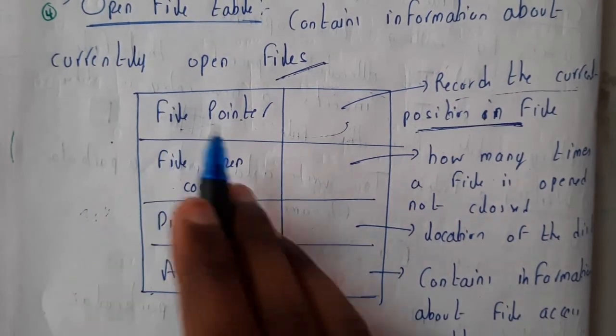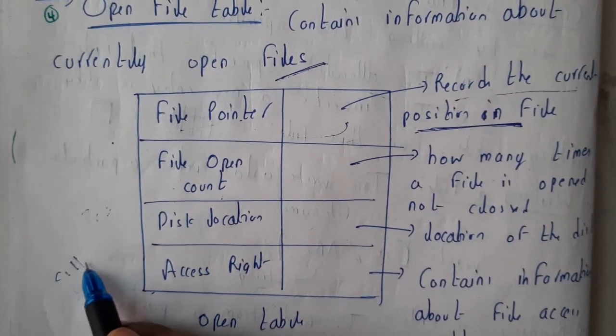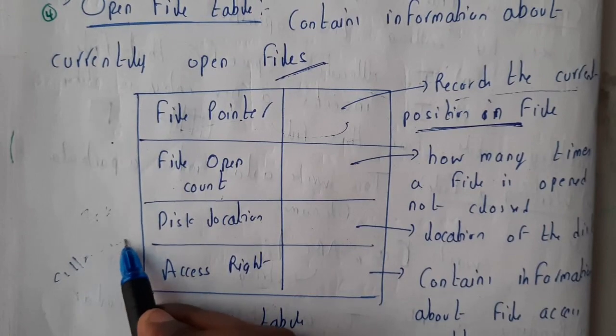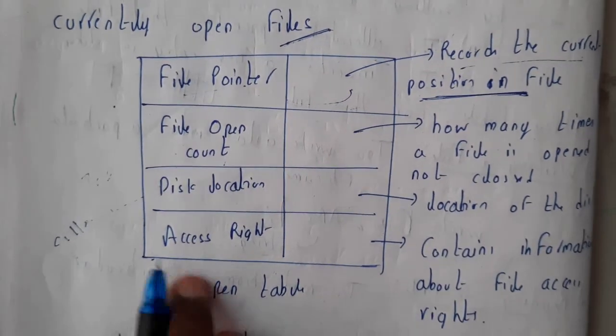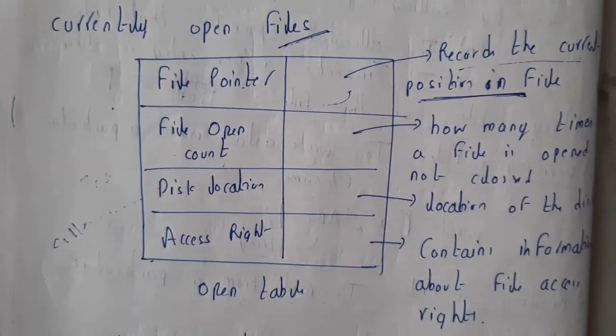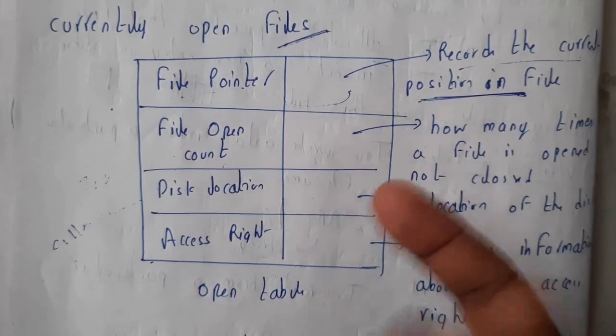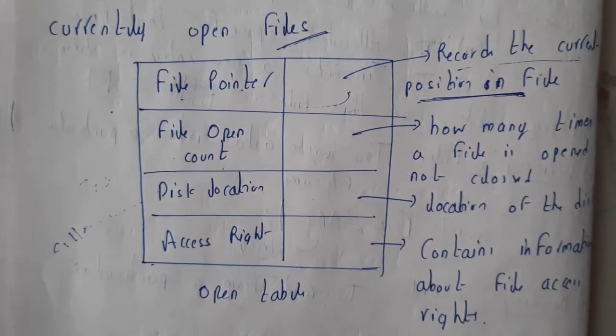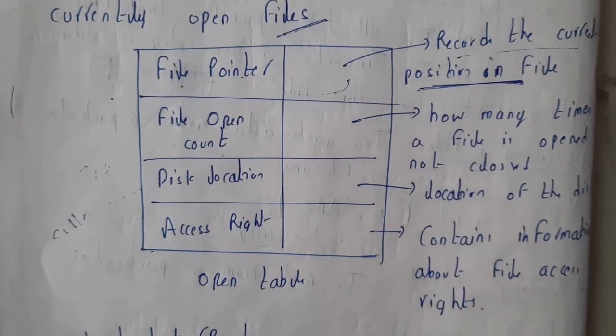Disk location is where that particular file is located on disk, like C drive, in program files, users, like that. Access rights are nothing but read, write, and execute. Basically those are the few powerful access rights that contain information about the access rights of the file.